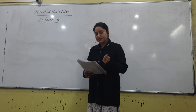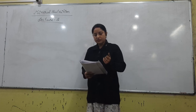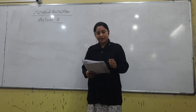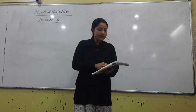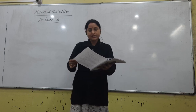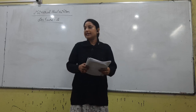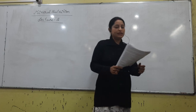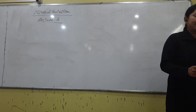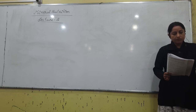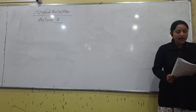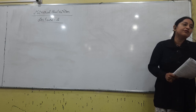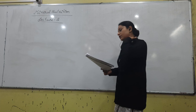Sulfur deficiency symptoms: chlorosis in younger leaves is the most frequently asked. Also, juice content of citrus reduces, roots and shoots growth is hampered, and yellow disease of tea occurs. The maximum question has been asked about chlorosis in the younger part. Juice content of citrus is also frequently asked.